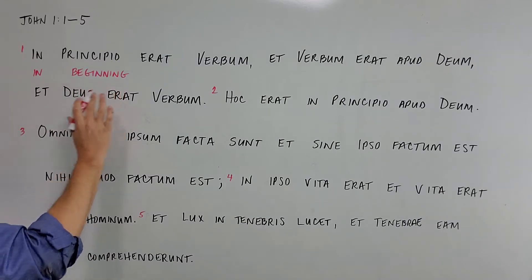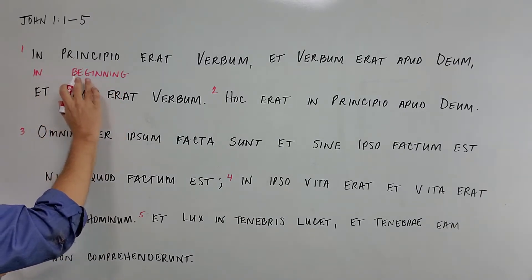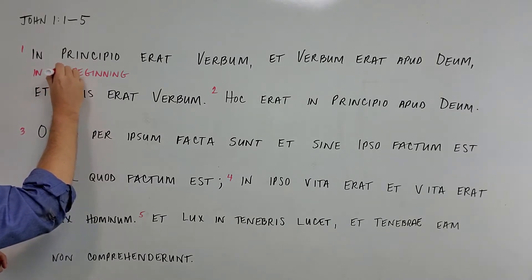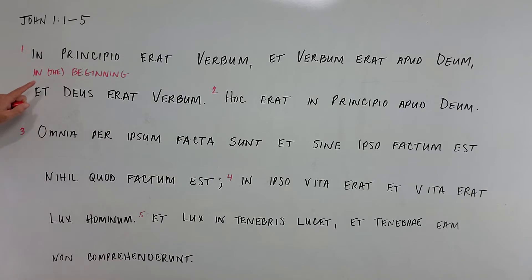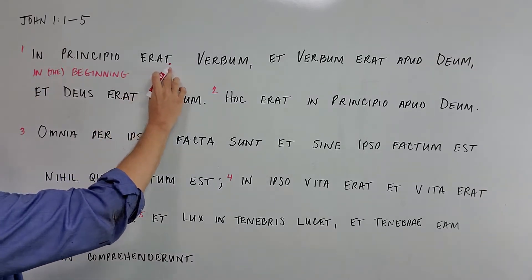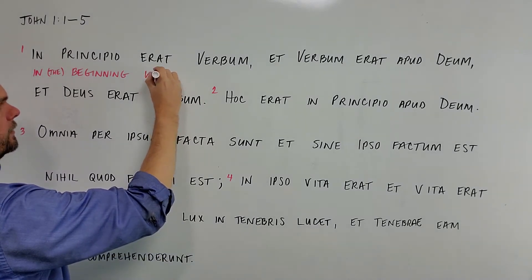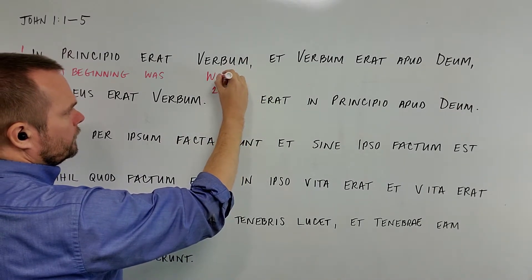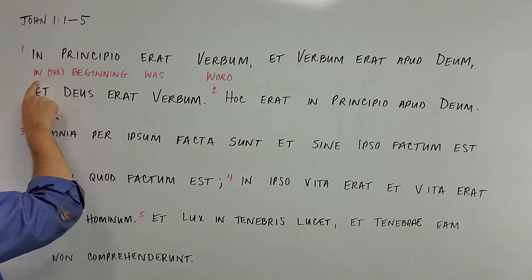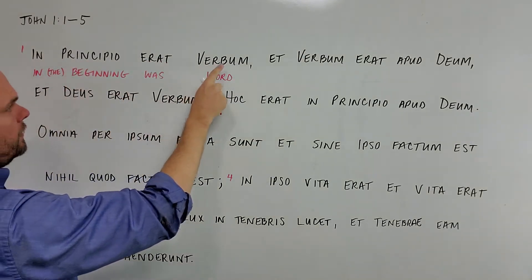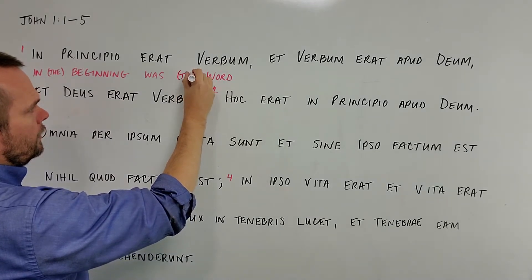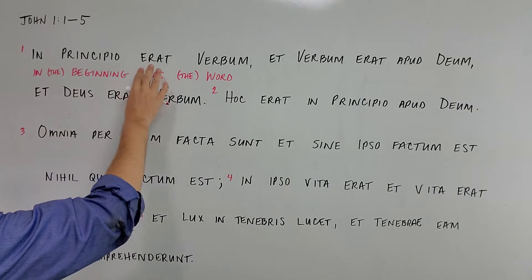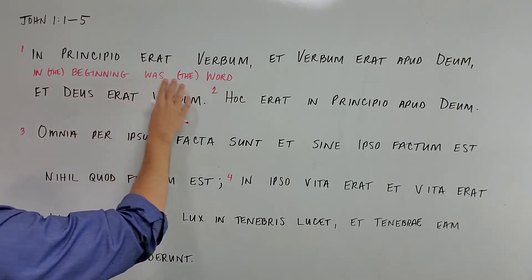To make clearer English, we'd like to say 'in the beginning,' so we'll add the word 'the' and put it in parentheses to remember that the word 'the' in English did not come from a Latin word. Next we have the word 'erat,' which is a verb that means 'was.' The noun 'verbum' means 'word.' In principio erat verbum — in the beginning was the word.